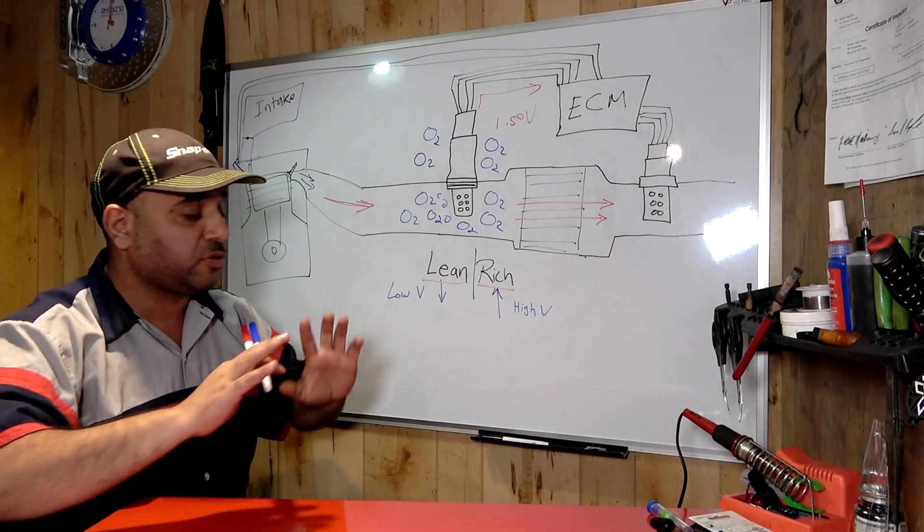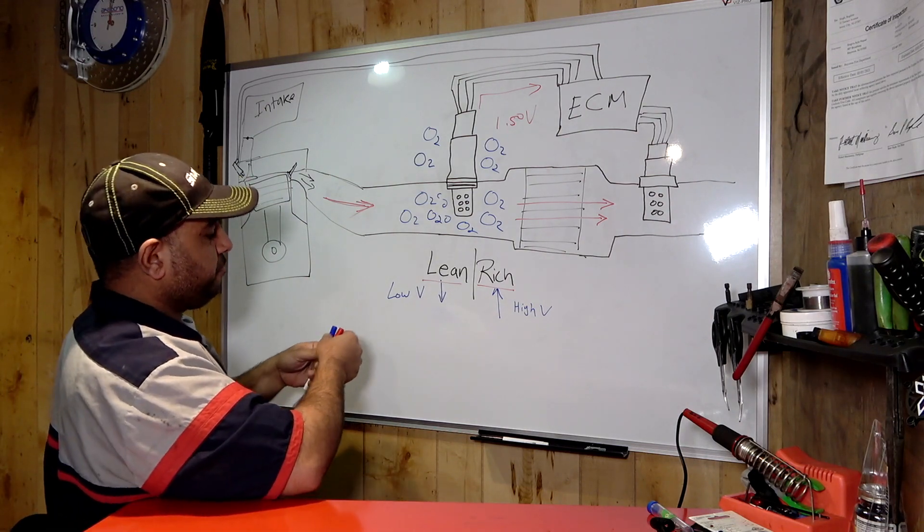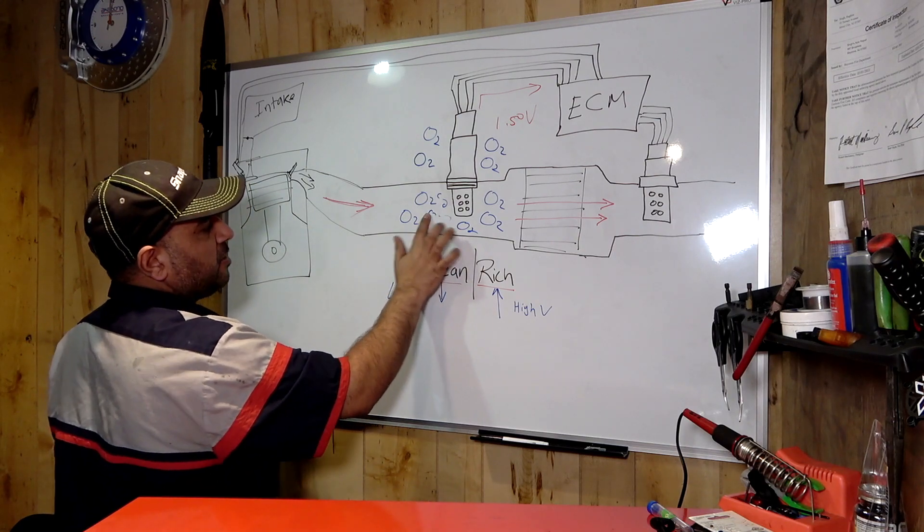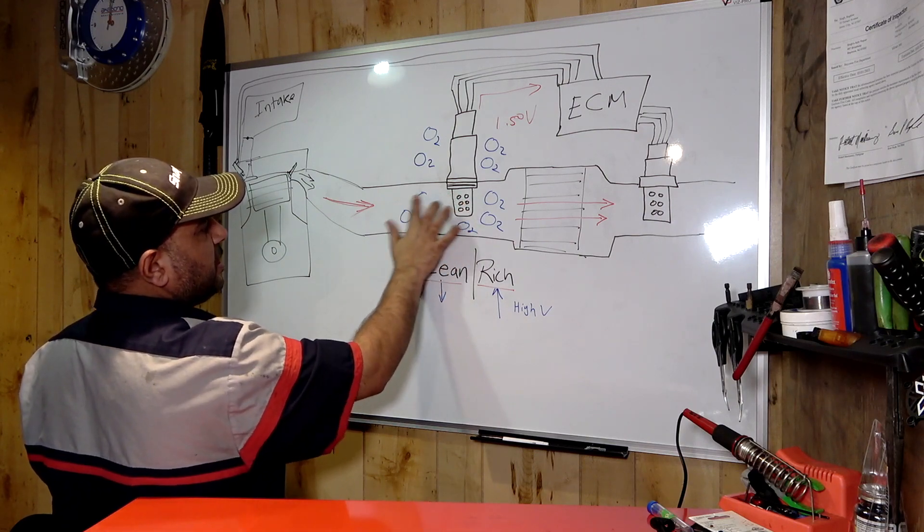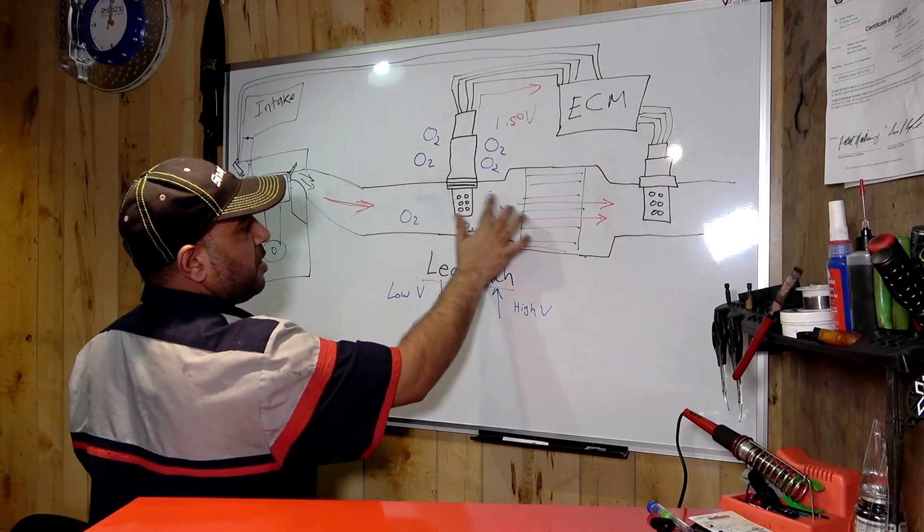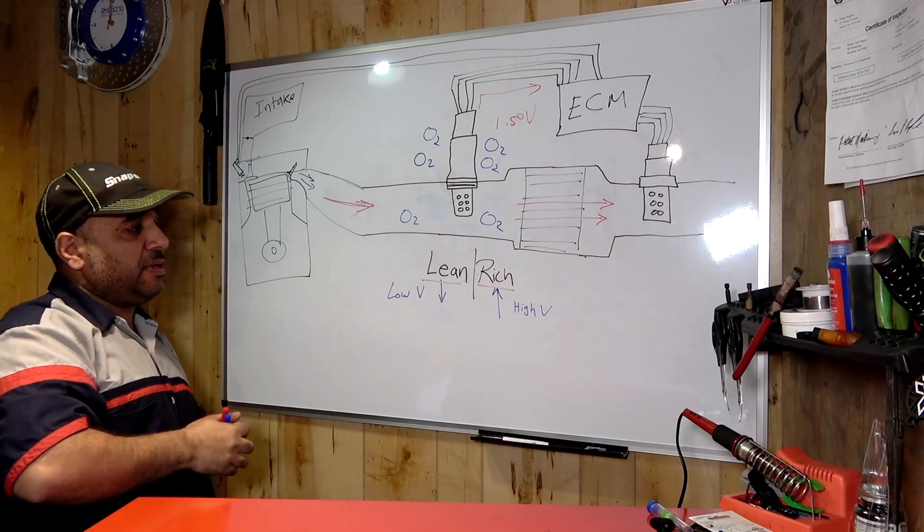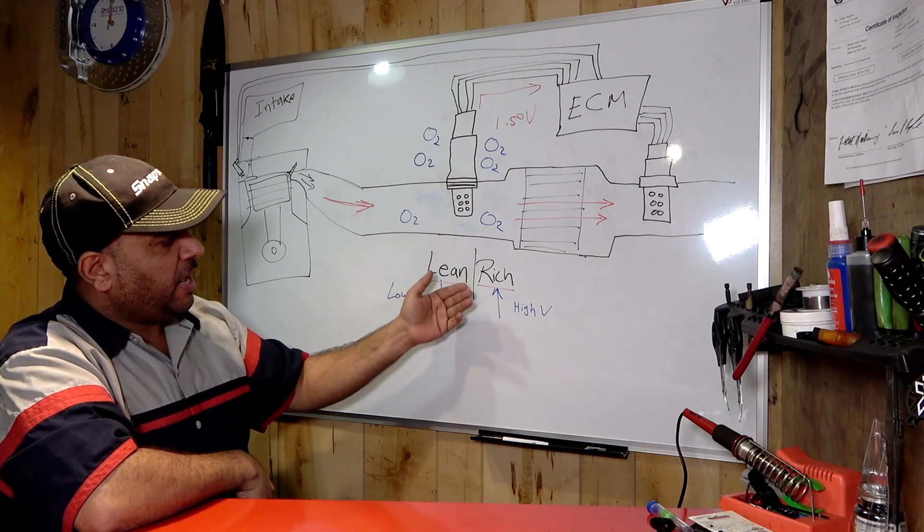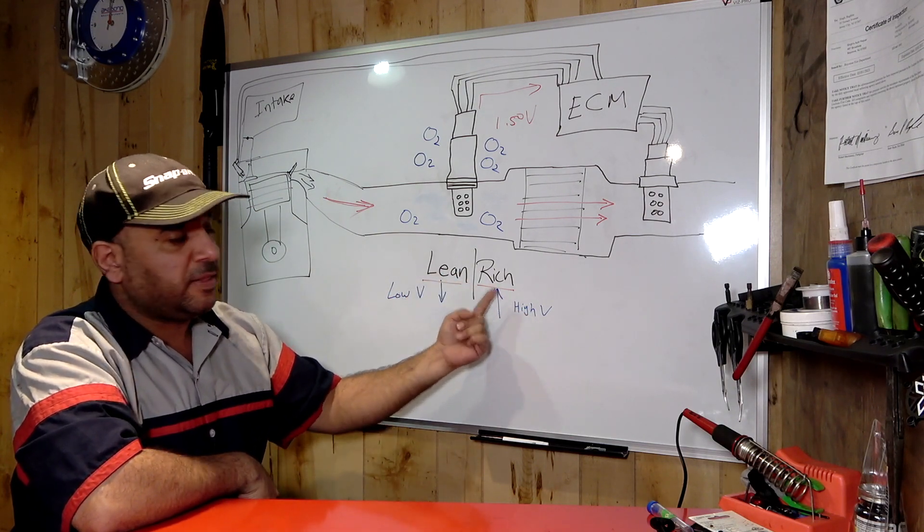This is just the basics. We don't want to go into crazy detail. Let's say it has less oxygen. It's gonna compare it from outside to inside here. That would be too rich, less oxygen in there, and it's gonna send the signal it's rich. That means the voltage is gonna go up.